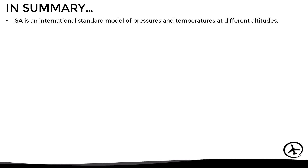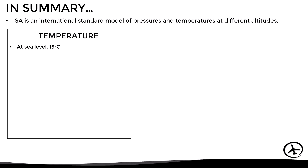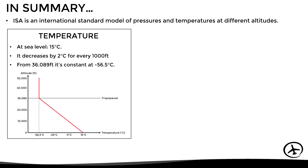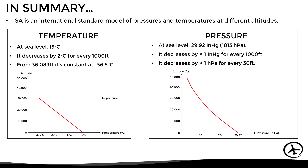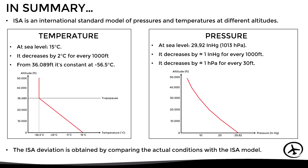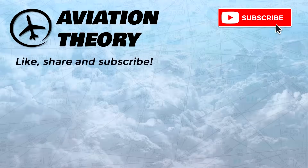Let's see a short summary of everything we talked about in the video. ISA is an international standard model of atmospheric conditions, mainly pressure and temperature at different altitudes. In terms of temperature, it is assumed that at sea level the temperature is 15 degrees and it decreases by 2 degrees for each 1000 feet increase in altitude until reaching 36,089 feet, from where it is considered constant at minus 56.5 degrees. In terms of pressure, it is assumed that at sea level the pressure is 29.92 inches of mercury or 1013 hectopascals, and it is reduced by approximately 1 inch of mercury for every 1000 feet or 1 hectopascal for every 30 feet at the first levels. Finally, the ISA deviation is a value obtained by comparing the current conditions in relation to the standard conditions.